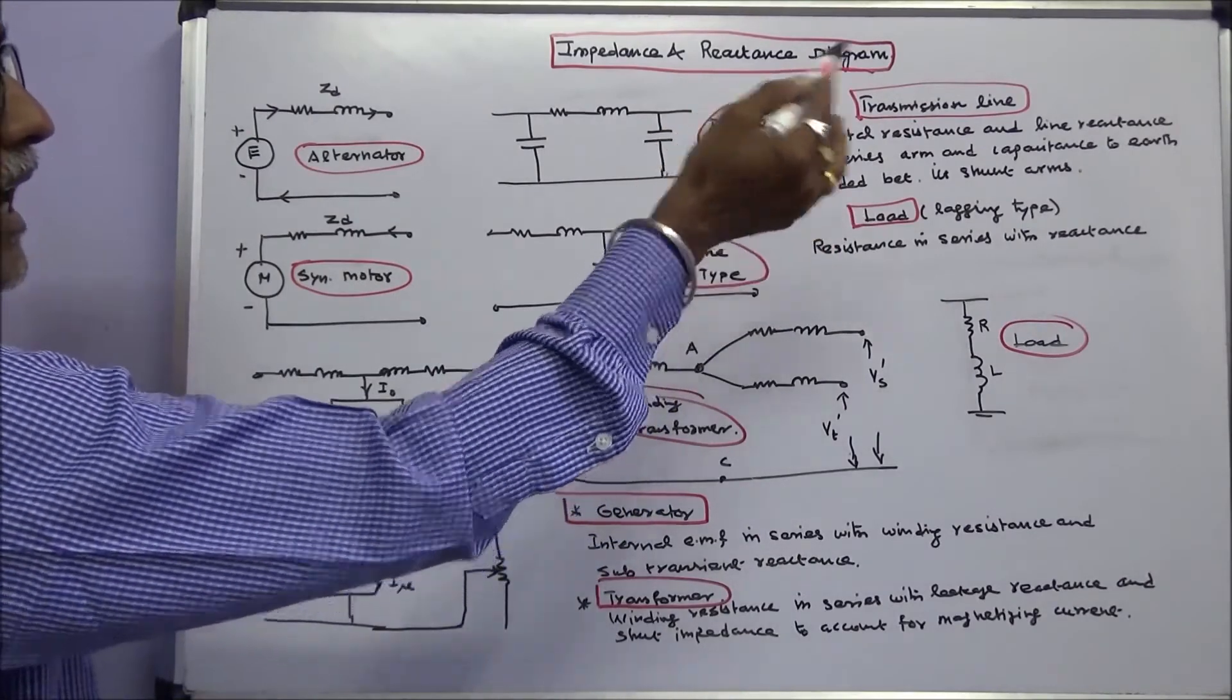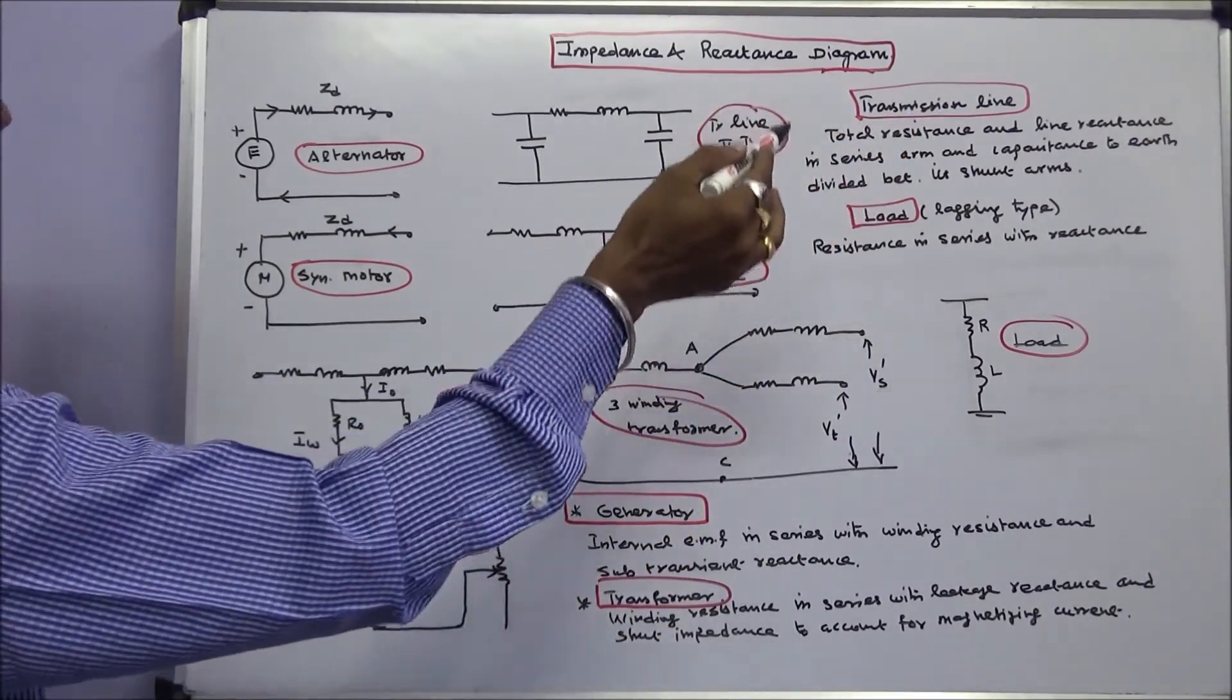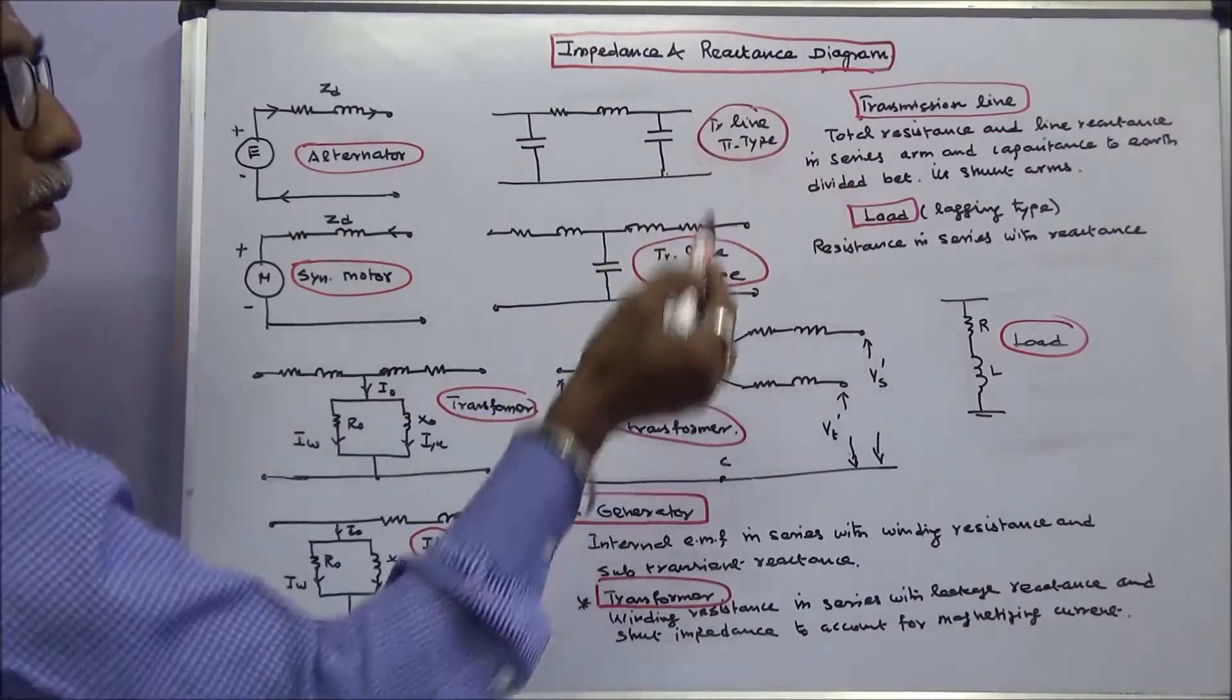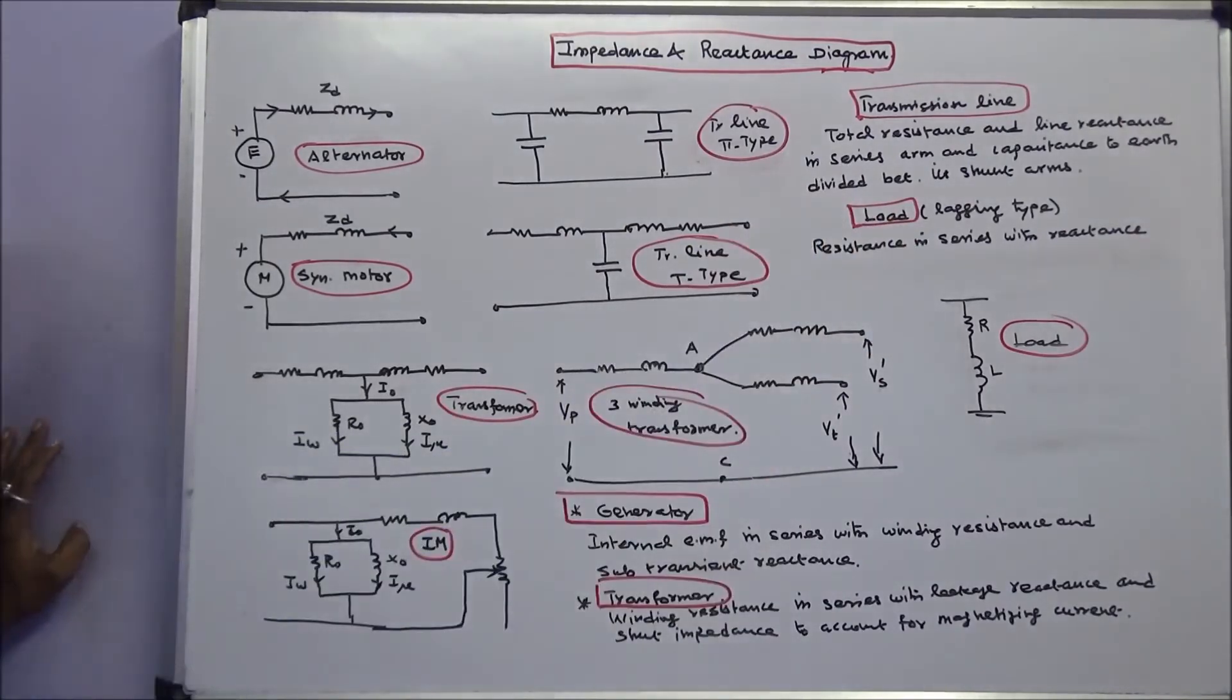For a transmission line, total resistance and line reactance in series arm and capacitance to earth divided between its shunt arm. For a lagging type load, resistance in series with the reactance.